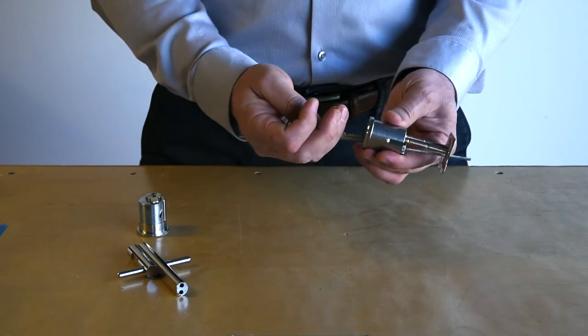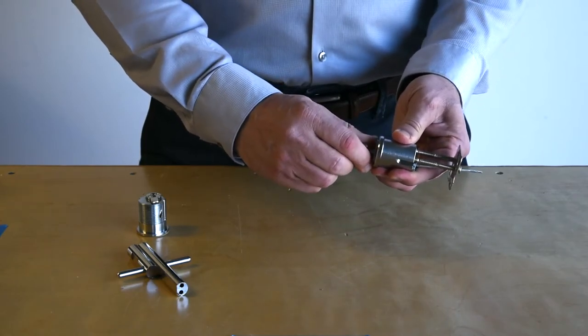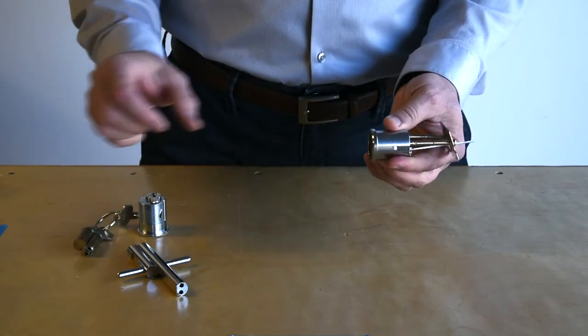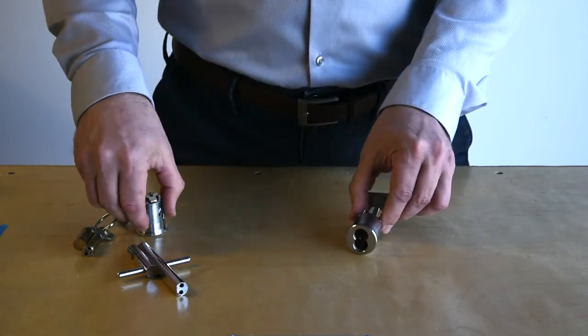Those are the two differences between the mortise cylinder and the rim cylinder. Thank you for watching.